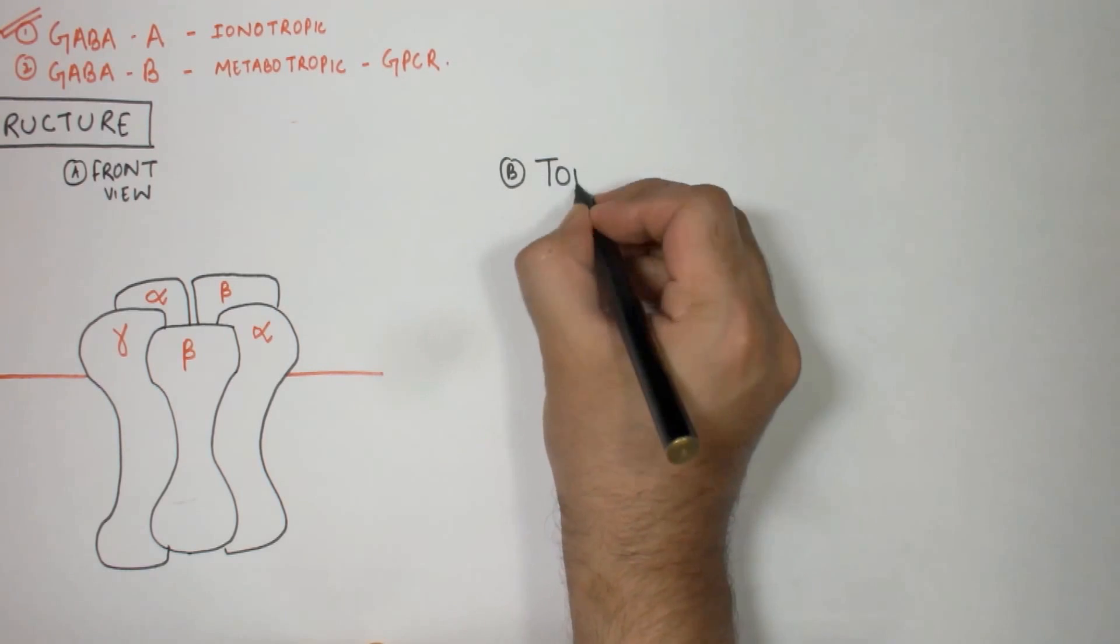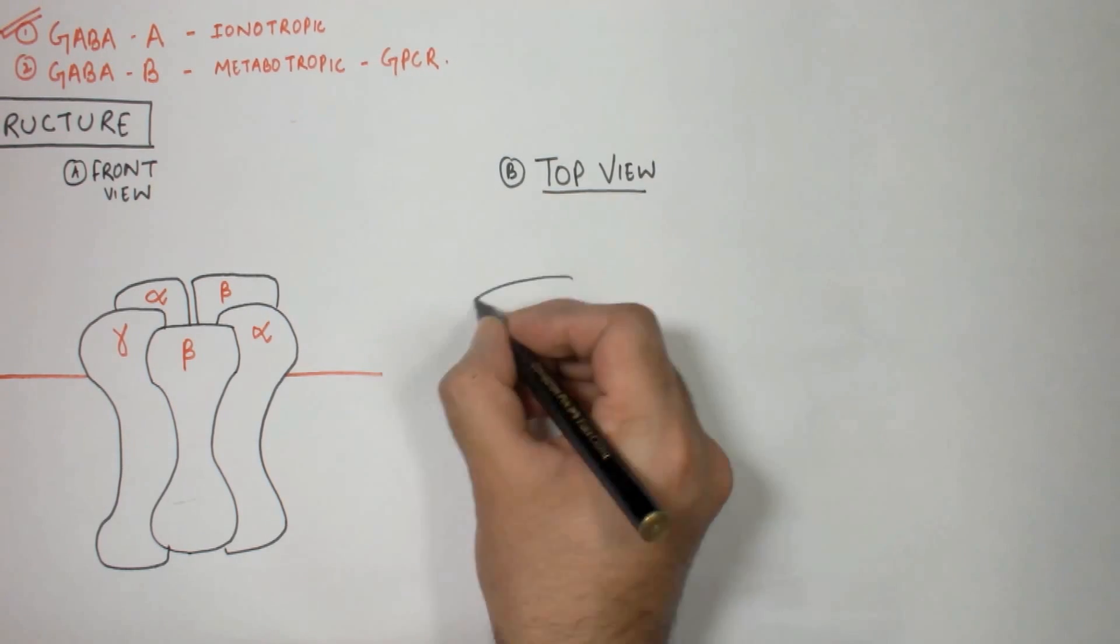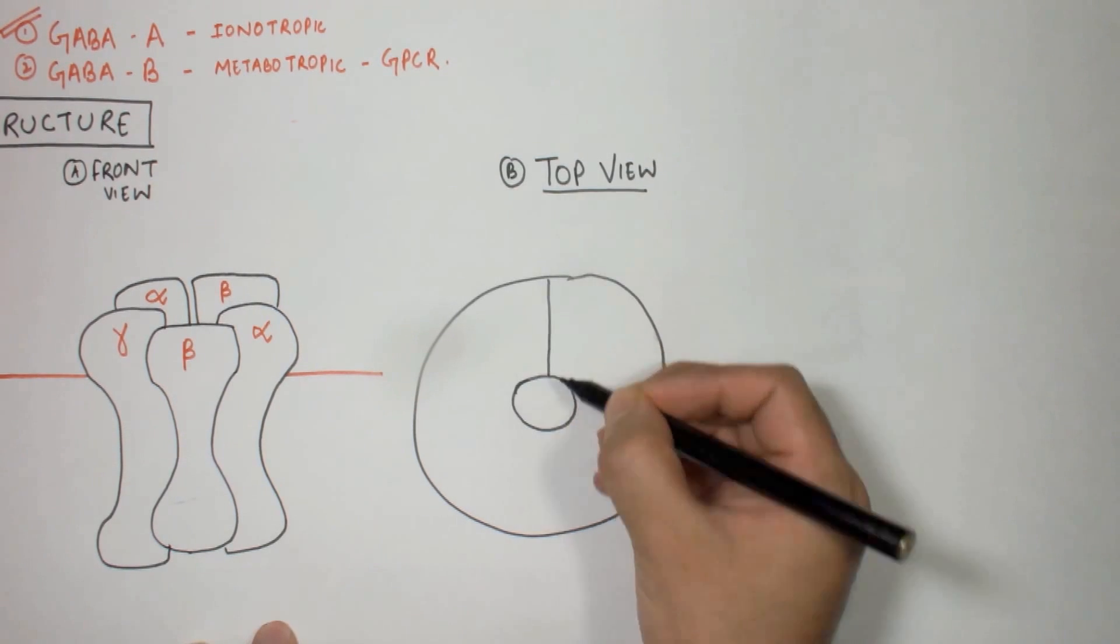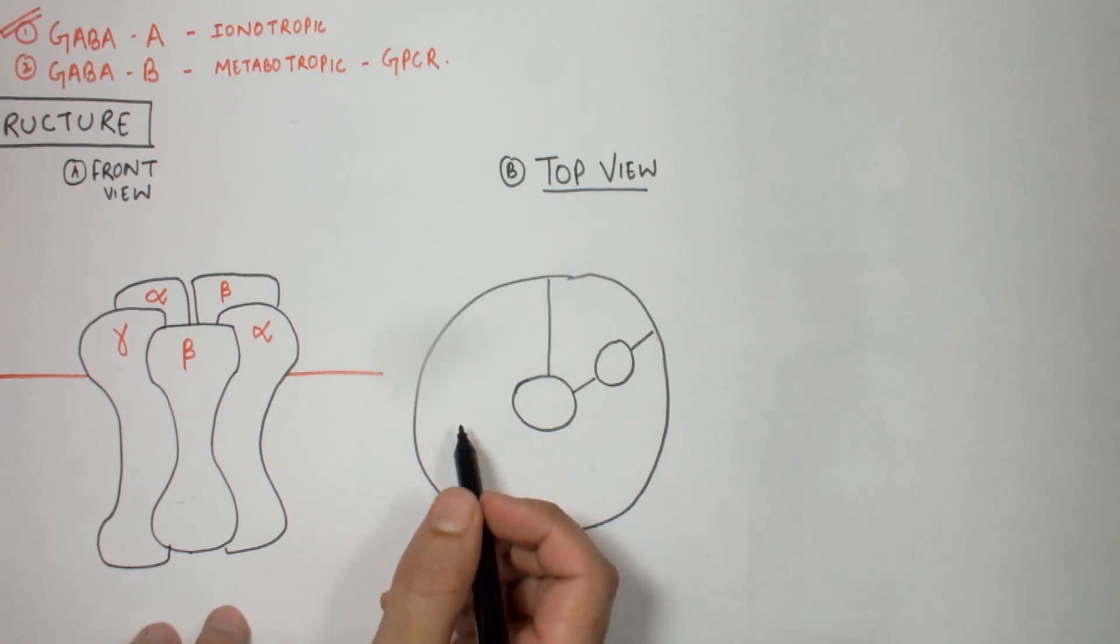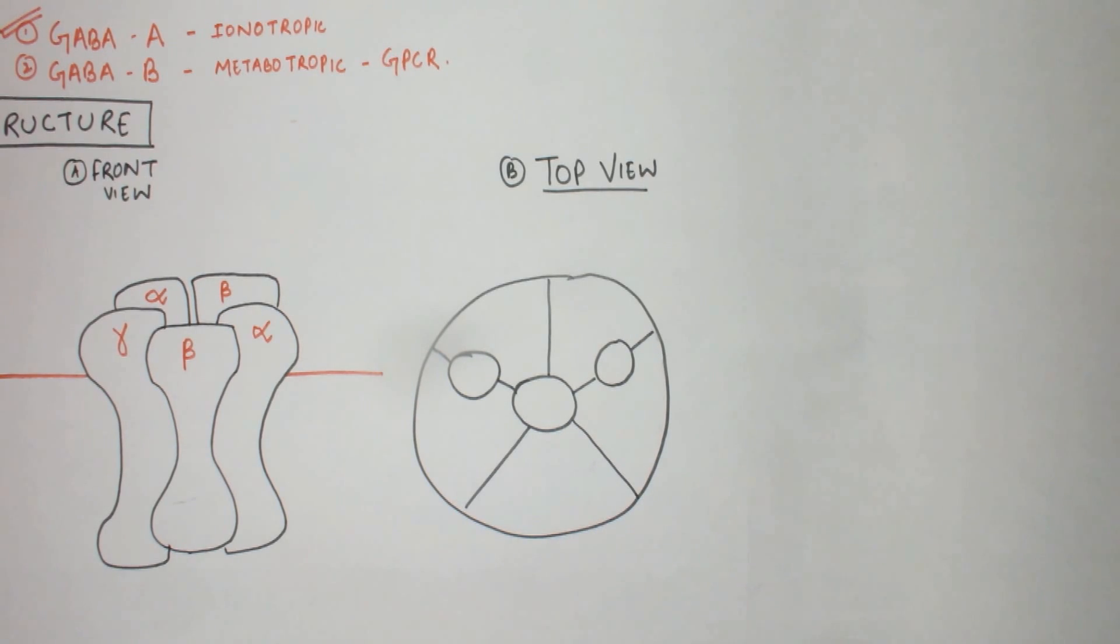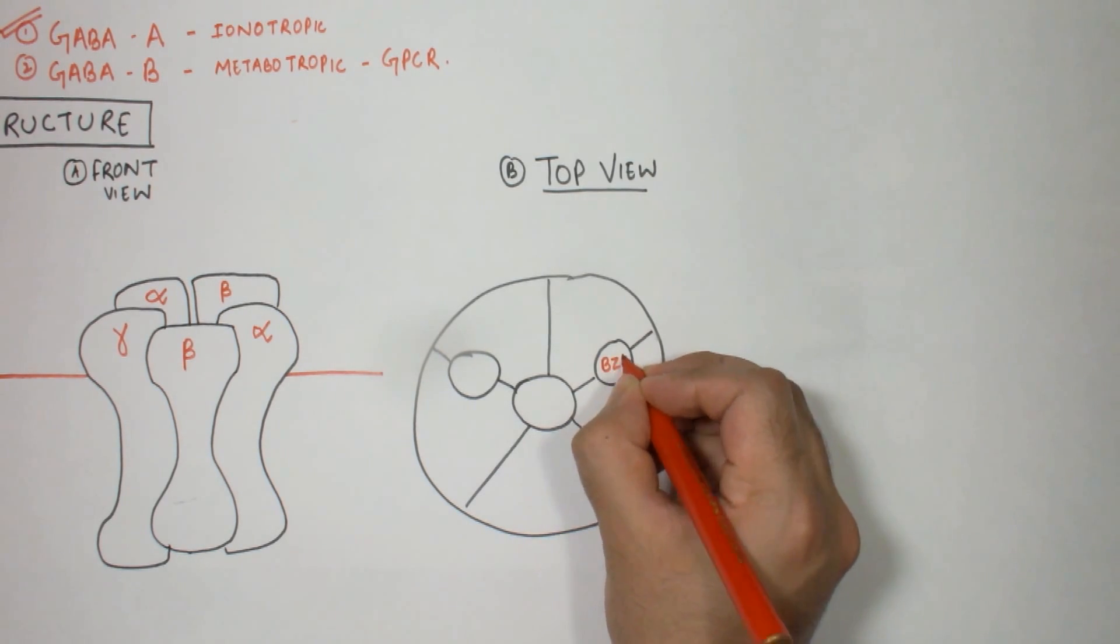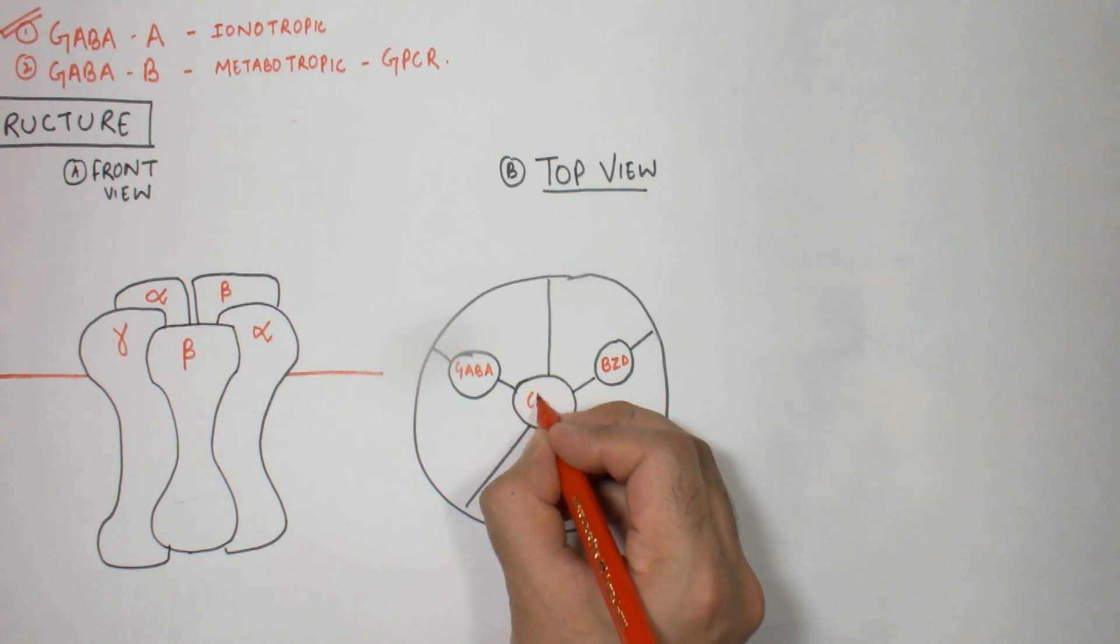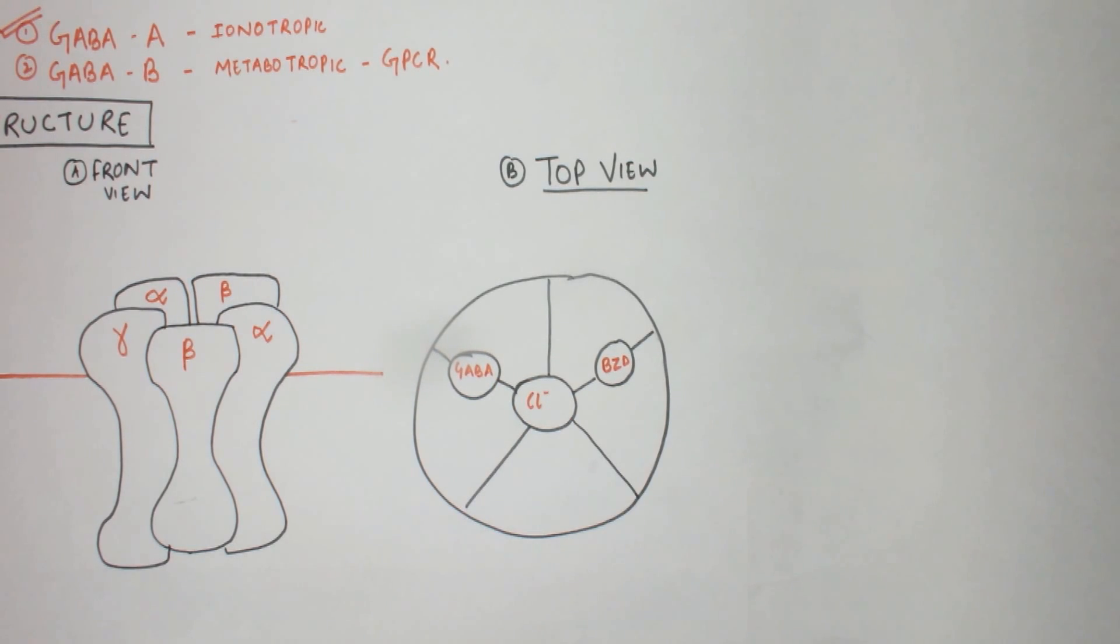Now let's look at this receptor from the top view. It consists of the central chloride pore and two drug binding sites. Mainly it consists of three drug binding sites, but for the purpose of illustration I have just drawn two: the first is the benzodiazepine binding site and the second is the GABA binding site.